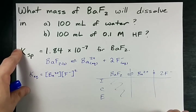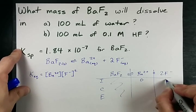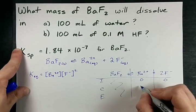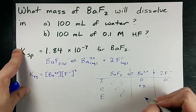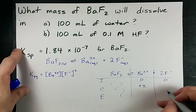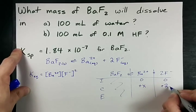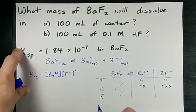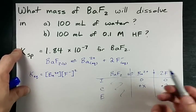BaF2 is a solid I don't really care about it. I start with none of either of these because we're starting with pure water. I'm going to gain some amount of Ba2+ and I'm going to gain twice as many F minuses because we get two F's for every Ba, a 1 to 2 ratio.